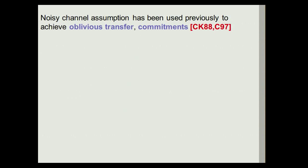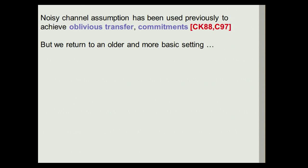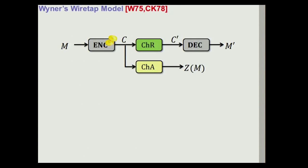Basing cryptography on noisy channels is actually something very old within our community. There has been work in the 80s started by Crepeau and Killian on designing protocols for bit commitments and oblivious transfers based on noisy channels. But today I want to go back to an even older and more basic setting considered within the information theory and coding community in the 70s, which is Weiner's wiretap channel model, introduced by Aaron Weiner in 1975 and later generalized by Cesar and Kerner in 1978.